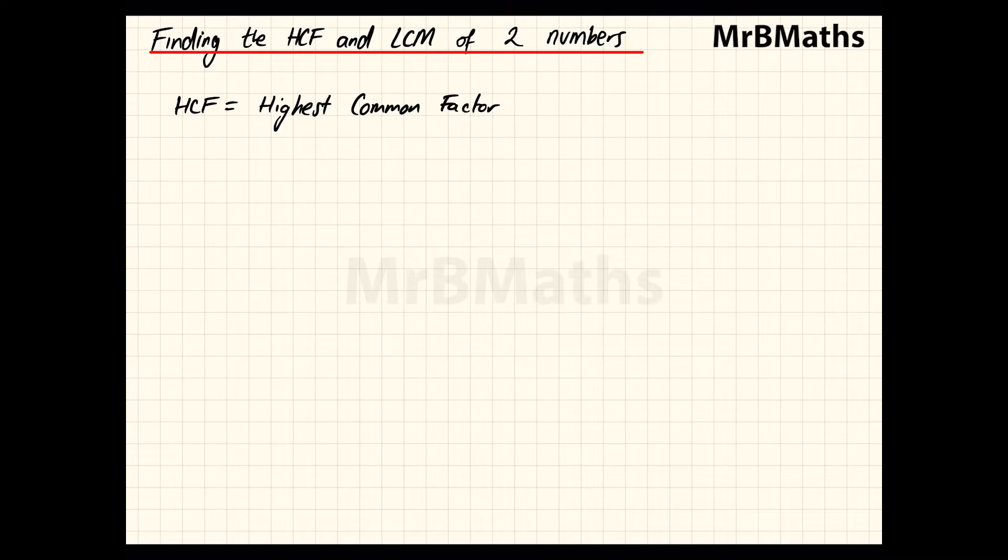LCM stands for Lowest Common Multiple. It's very important you don't get the two mixed up: HCF is the Highest Common Factor, LCM is the Lowest Common Multiple. The first two numbers we're going to work with are 24 and 30.